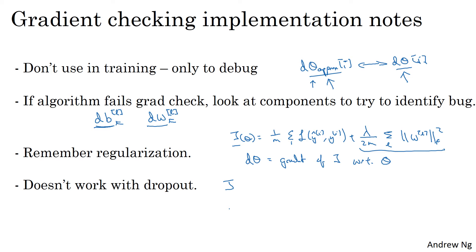So it's difficult to use grad check to double check your computation with dropout. What I usually do is implement grad check without dropout. So if you want, you can set keep_prob in dropout to be equal to 1.0, and then turn on dropout and hope that my implementation of dropout was correct. There are some other things you could do like fix the pattern of nodes dropped and verify that grad check for that pattern of units killed off is correct. But in practice, I don't usually do that. So my recommendation is turn off dropout, use grad check to double check that your algorithm is at least correct without dropout, and then turn on dropout.